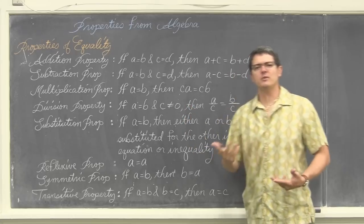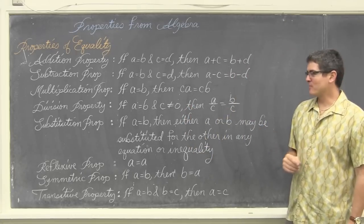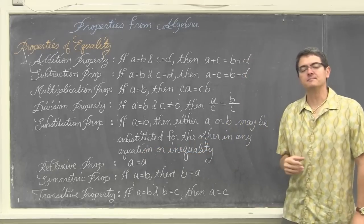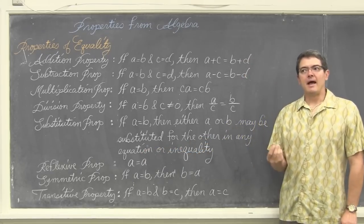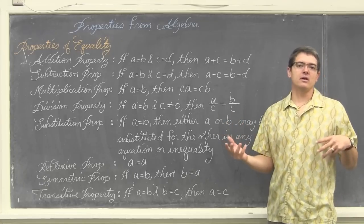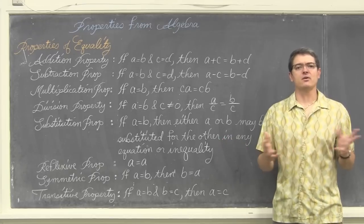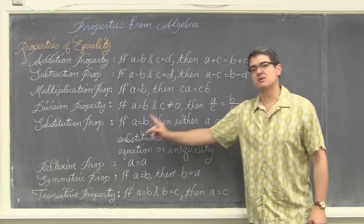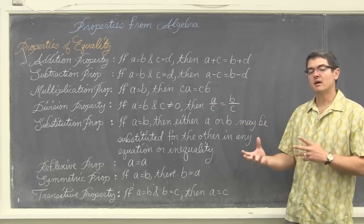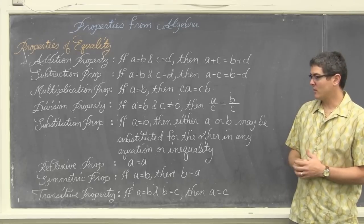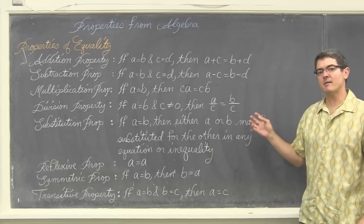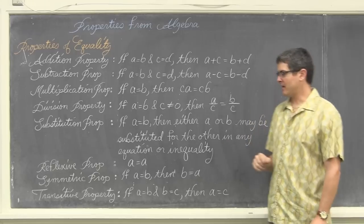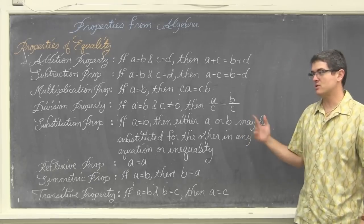Notice all those if-then statements — that's why we just had that structure in our geometry book. The substitution property states that if A equals B, then either A or B may be substituted for the other in any equation or inequality. For example, if you have an expression like 2x squared minus 7 and you're told x equals 7, you substitute 7 in for x and evaluate. We've already been doing substitution property. In geometry, using names of angles and vertices makes the structure a little more complex, but it's still the same substitution property we learned in algebra.